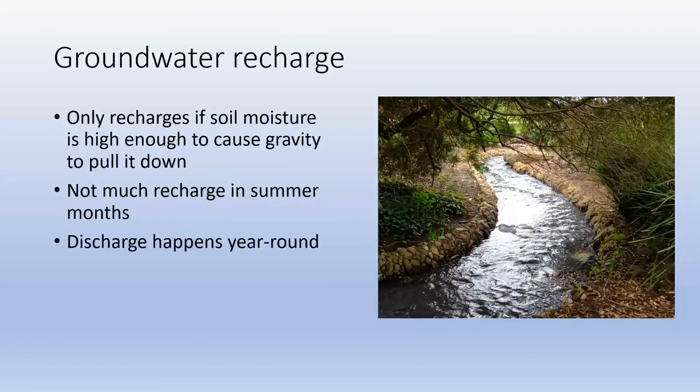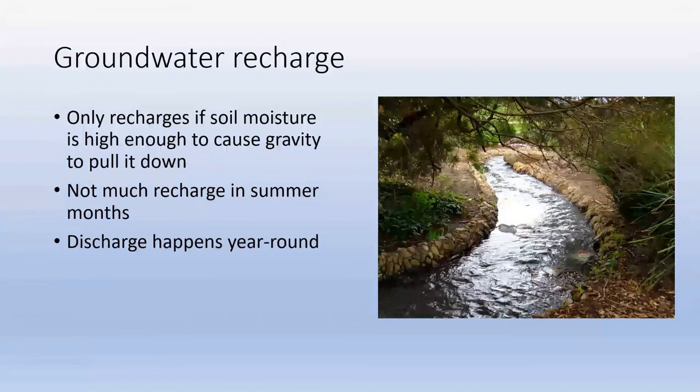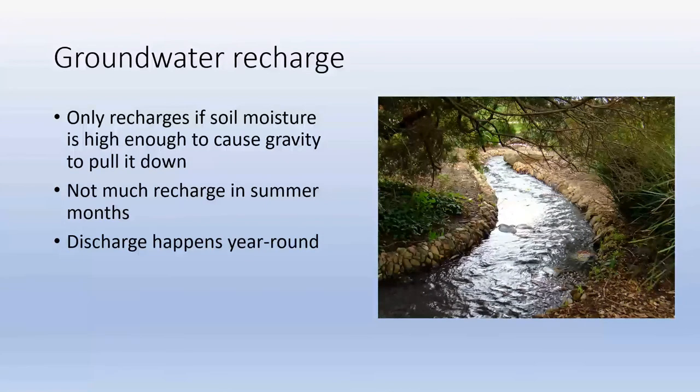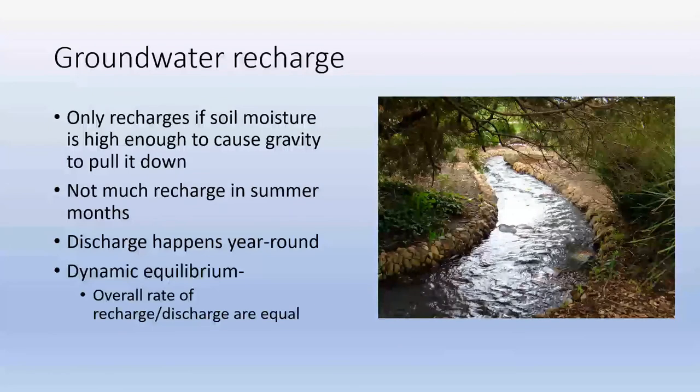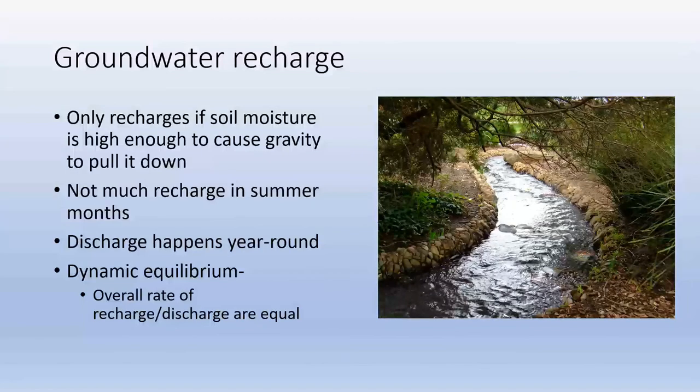However, it is important to note that even though recharge is very sporadic, groundwater discharge is fairly constant and does happen year round. So naturally, there's a dynamic equilibrium. Overall, the rate of recharge and discharge are equaled out. How do we know that? Well, because our entire planet isn't, our entire ground isn't full of water and we actually still have groundwater. So there must be some sort of balance.